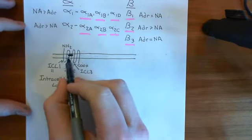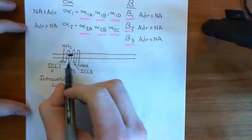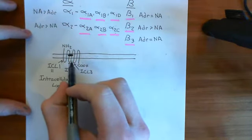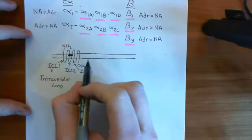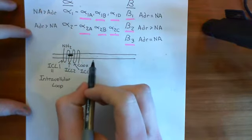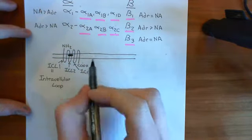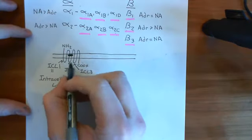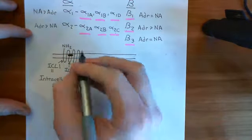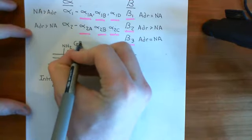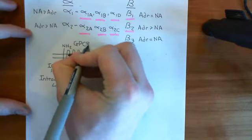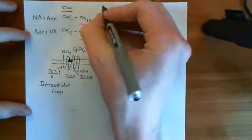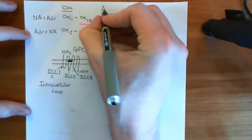When the ligand binds, it causes a change in conformation of the three intracellular loops. When they change conformation, they make available a binding site for the alpha subunit of a heterotrimeric G protein. This G-protein-coupled receptor can be thought of as an adrenoceptor, which is often abbreviated to AR.